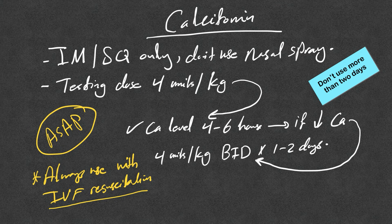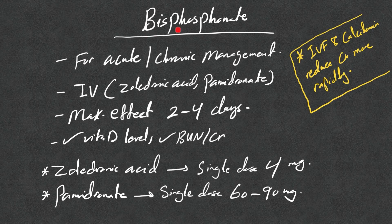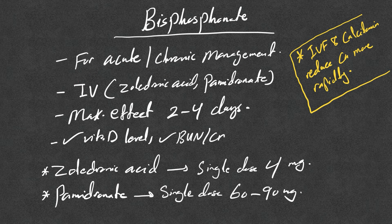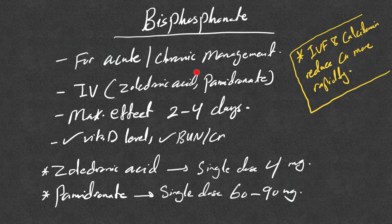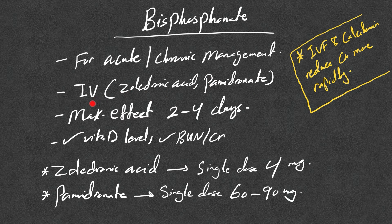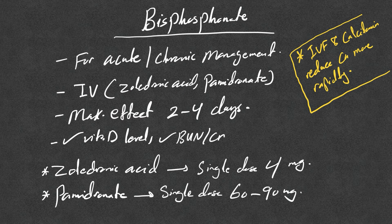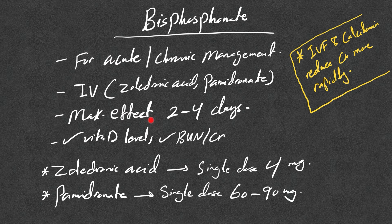Bisphosphonate is for acute and chronic management of hypercalcemia. IV zoledronic acid or pamidronate. Zoledronic acid is the main one we use. Unfortunately, most hospitals, this has to be approved by a nephrologist before we give it, as well as the pamidronate. The maximum effect is two to four days.